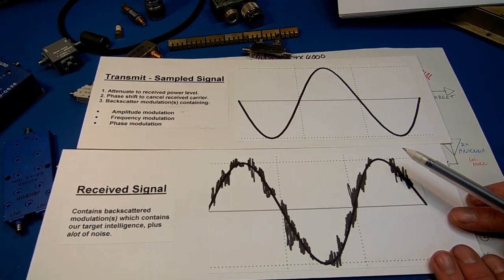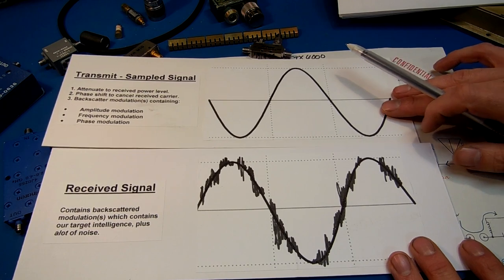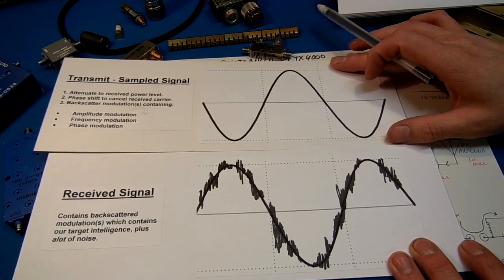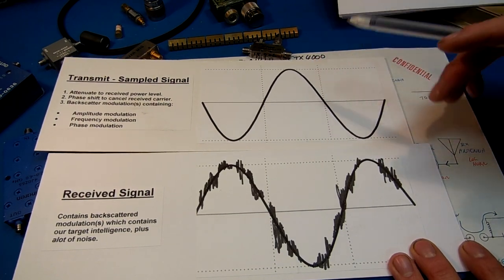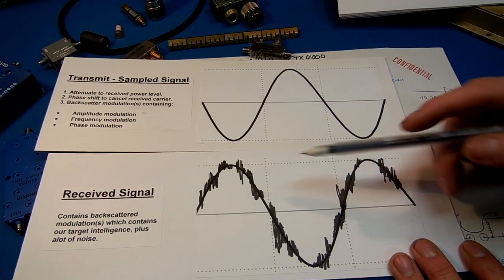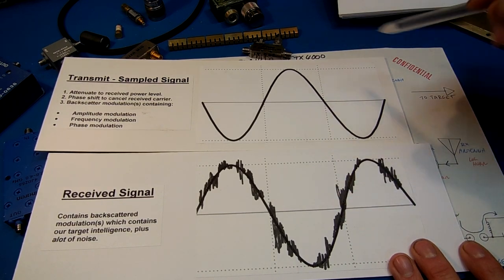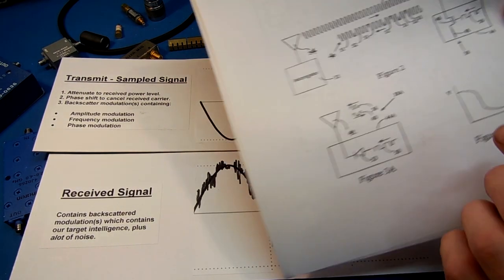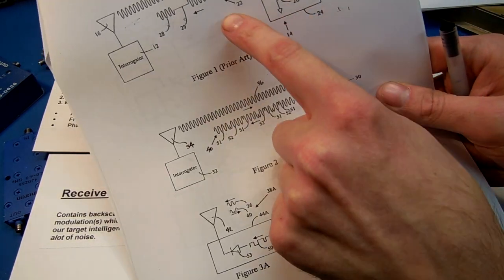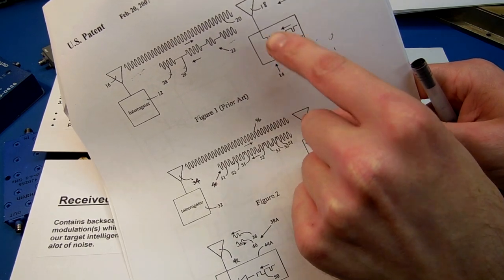Essentially, what we're doing is adjusting the phase, the phase adjuster. At some point, when it's 180 degrees out of phase, our carriers are gonna cancel. And we're left with our noise riding on our reflected signal, which is our backscatter modulation. That backscatter modulation is what's created by our bug chopping up a FET in the implanted bug.